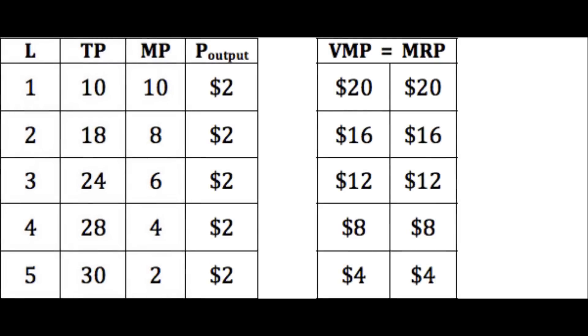And because we were looking at perfectly competitive output previously, and we're still looking at perfectly competitive output now, the output price, constant at $2 in this case, value of the marginal product, and marginal revenue product are the same as they were before.